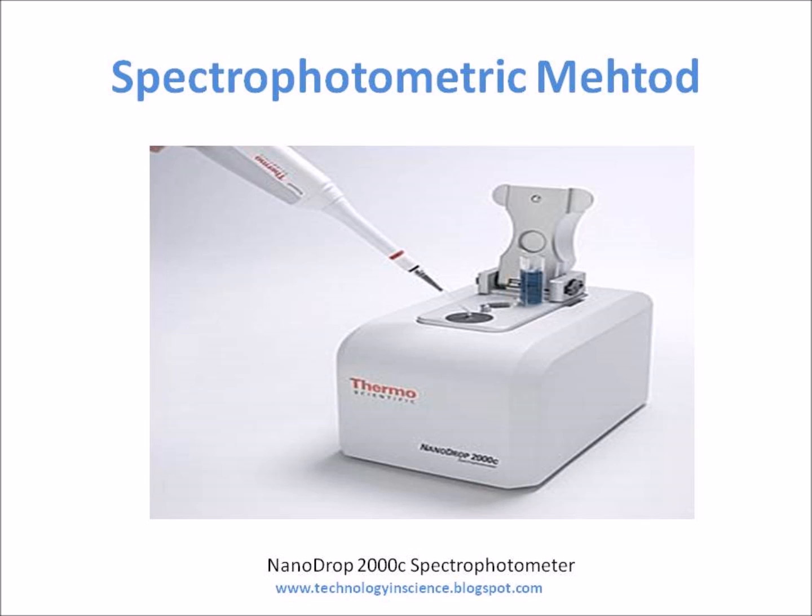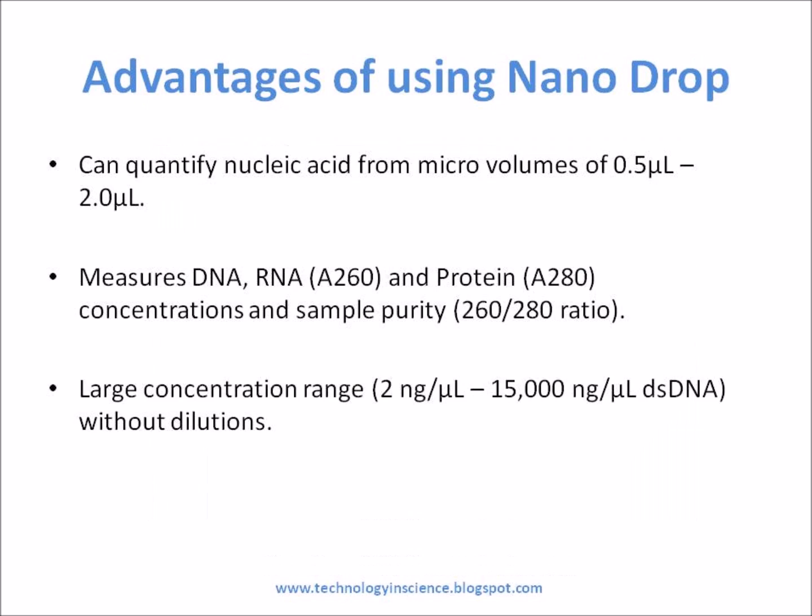In the spectrophotometric method, nucleic acids absorb UV light at a wavelength of 260 nm. A solution containing the nucleic acid to be tested is exposed to UV light and the absorbance is measured — the more light it absorbs, the more nucleic acid the test solution contains. Calculations are made according to Beer-Lambert's law.